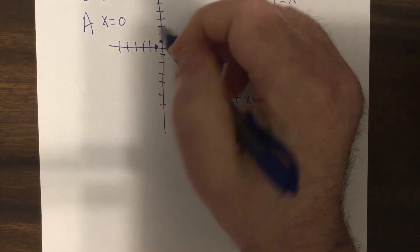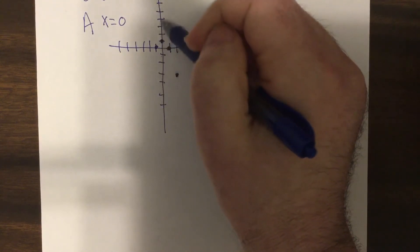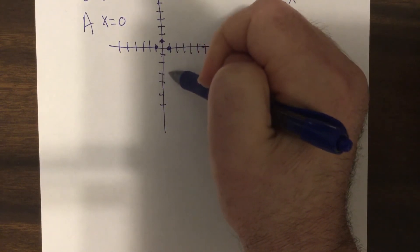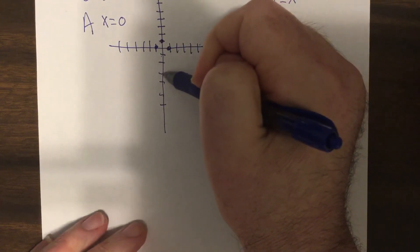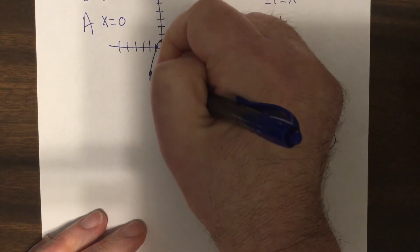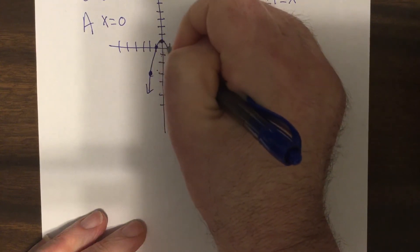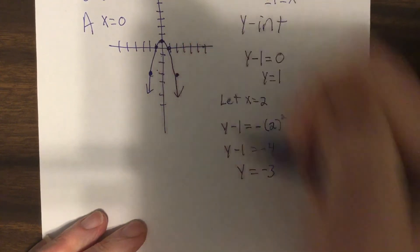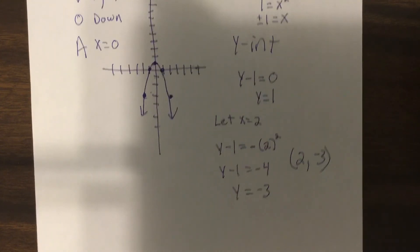But wait a minute. This is my axis of symmetry. So if there's a point two units to the right, there has to be a point two units to the left. And that's our parabola.